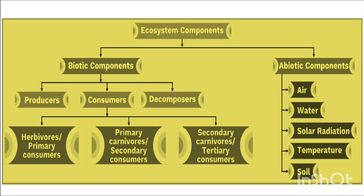What are the components of an ecosystem? There are biotic components and abiotic components. Biotic components — that means living components — are producers, which are generally the green plants in any ecosystem; second, consumers; and third, decomposers. Under abiotic or physical components: air, water, solar radiation, temperature, and soil.